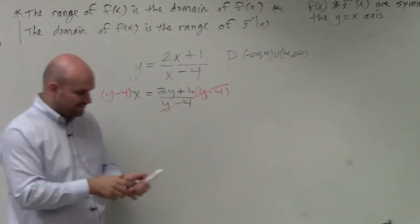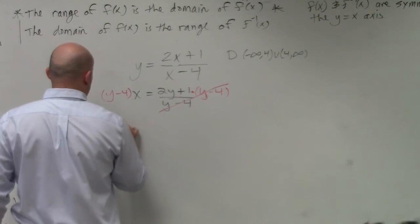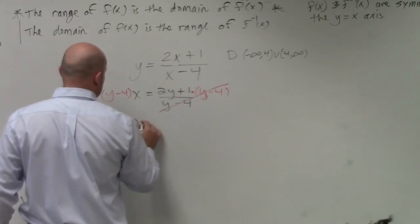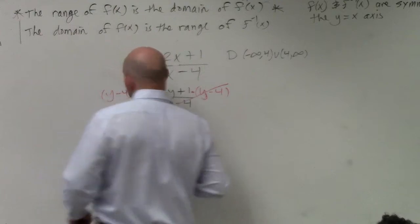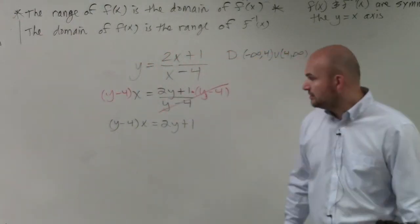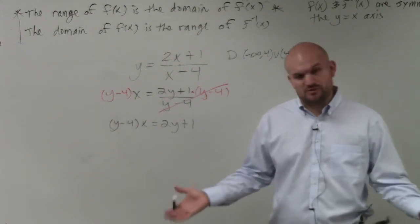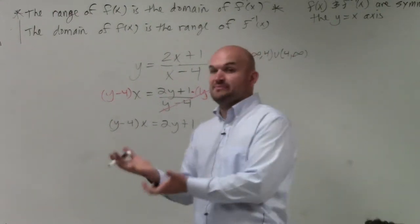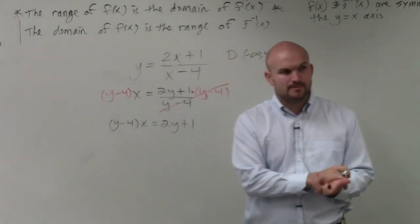So now I'm left with this equation: y minus 4 times x equals 2y plus 1. Now if you guys remember in algebra 1, when we were solving for equations, what we called multi-step equations, the variable had to be on the same side, right? Correct? Well, I have variables on both sides. So I want to get the variables on the same side.